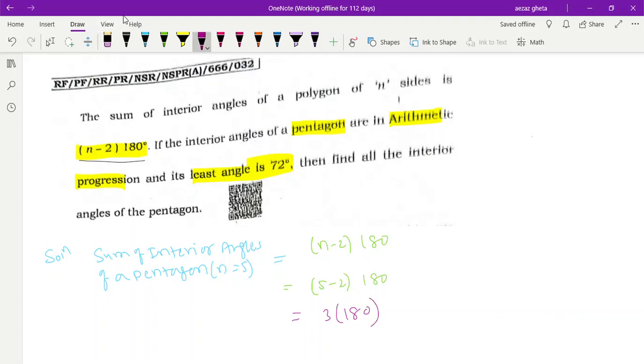3 into 180 degrees equals 540 degrees. So 540 degrees will be the total.